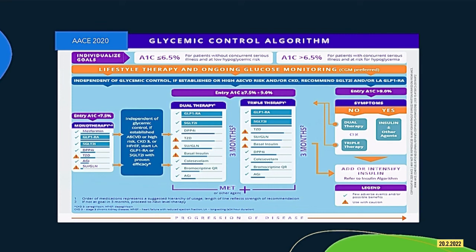This is the glycemic control algorithm of the AACE 2020 — American Association of Clinical Endocrinology. If HbA1c is less than 7.5%, monotherapy is started. If HbA1c is within the range of 7.5% to 9%, dual therapy should be considered. If HbA1c is more than 9% and the patient has symptoms of hyperglycemia, insulin therapy should be initiated. If HbA1c is more than 9% but the patient has no symptoms of hyperglycemia, dual or triple therapy can be considered. For patients with high ASCVD risk and/or CKD, an SGLT-2 inhibitor and/or long-acting GLP-1 receptor agonist is recommended.